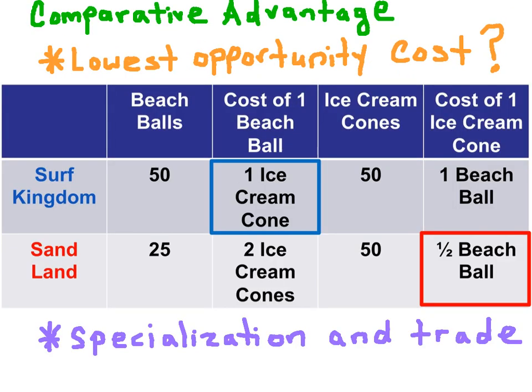Let's put all this information into a chart to determine the opportunity cost of one beach ball and the opportunity cost of one unit of ice cream in these two economies. Whichever economy has the lower opportunity cost in the production of a good is said to have the Comparative Advantage. When they have the Comparative Advantage, that means they would specialize in the production of that good and export that good if trade is to occur.